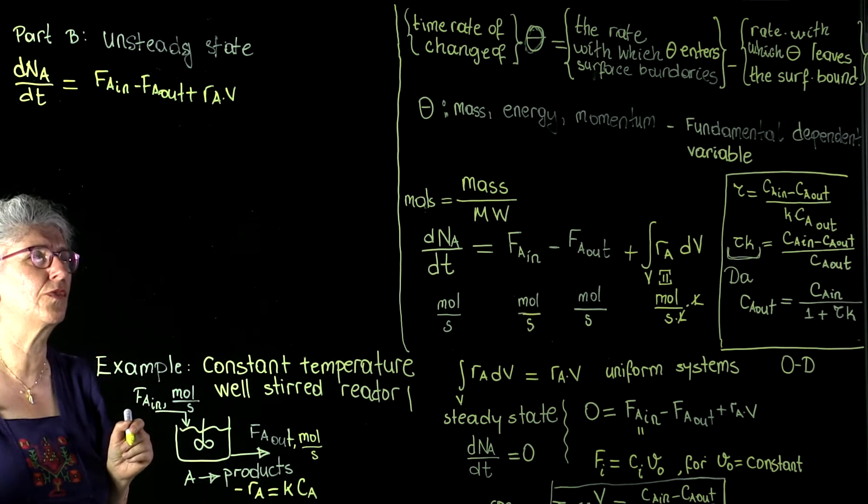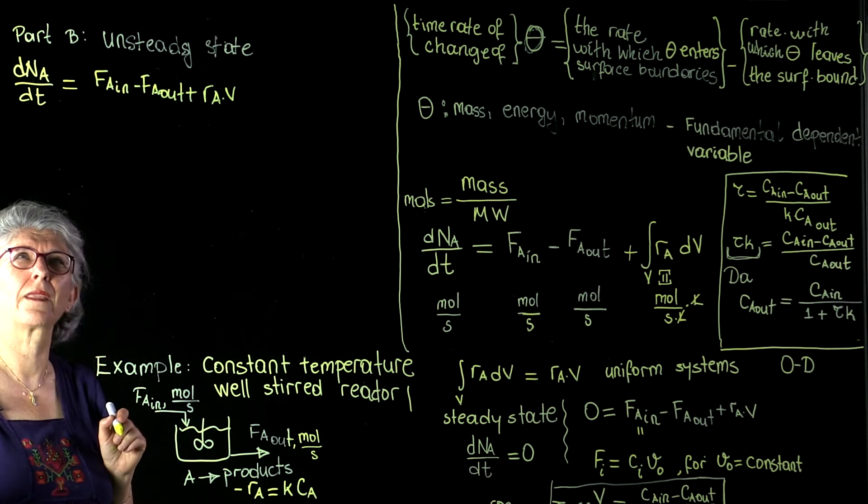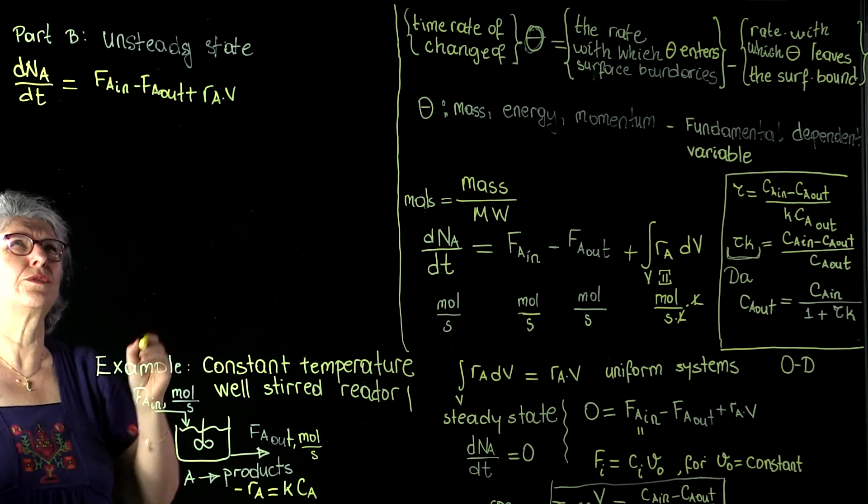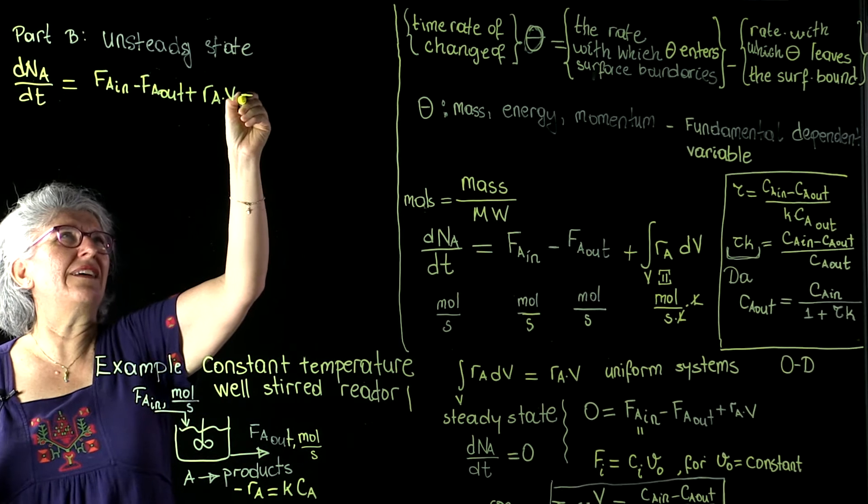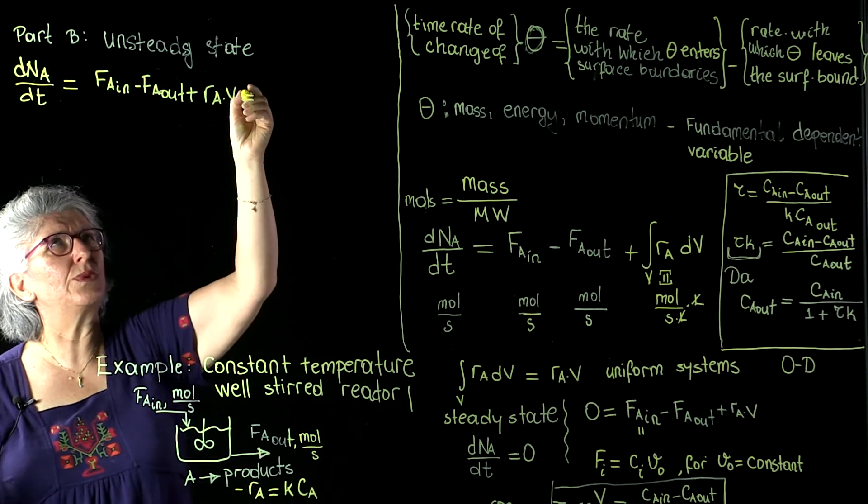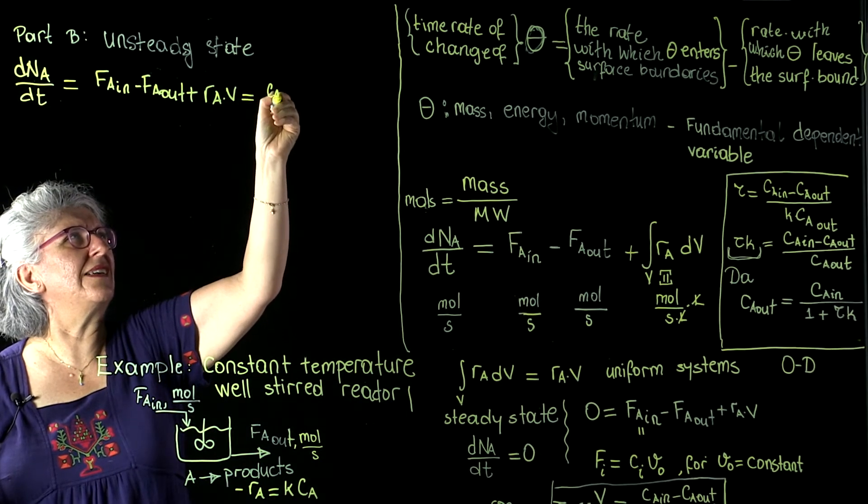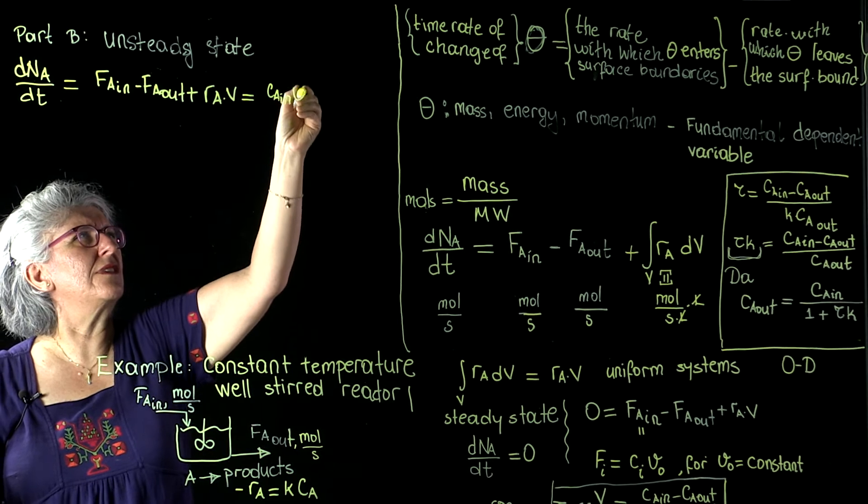Remember, our reactor was uniform and we took RA out of the integral. Now we are going to substitute again everything in its place. FA is equal to CA in times V0.